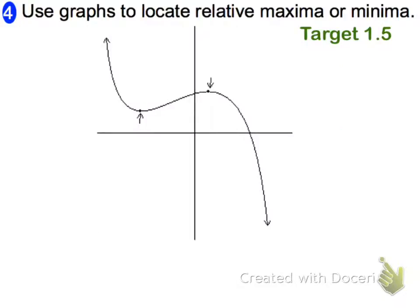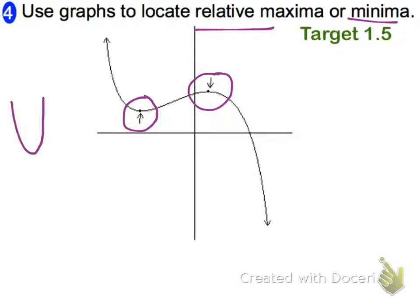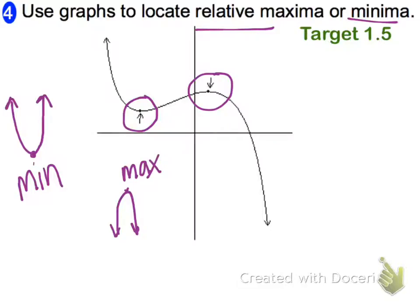The next part is talking about relative maximums and minimums — basically those changing points where the graph switches from increasing to decreasing or decreasing to increasing. We call those a relative max or relative min. If it's a low point on the graph, it's a minimum. If it's a high point, it's a maximum. On this graph, we have minimums and maximums at specific turning points.